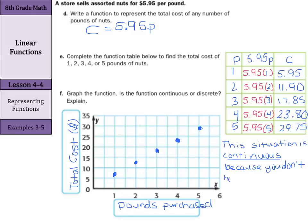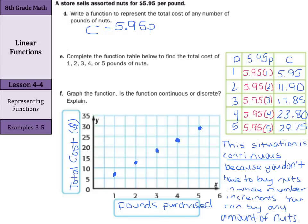to buy nuts in whole number increments. You can buy any amount of nuts. You can buy two and a half pounds of nuts. You can buy three and a half pounds of nuts. You don't have to just stick with the whole number poundage. In fact, it would be very difficult to buy a whole number poundage. So, we can draw a line through our points since this is now a continuous function.